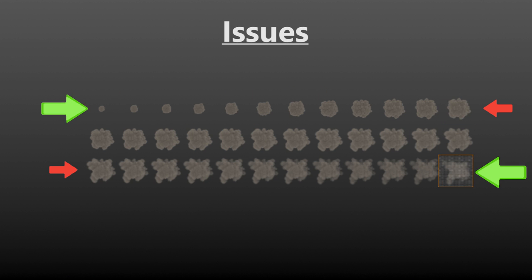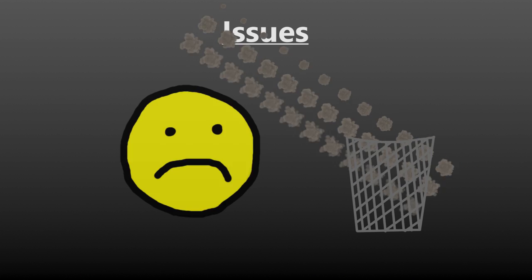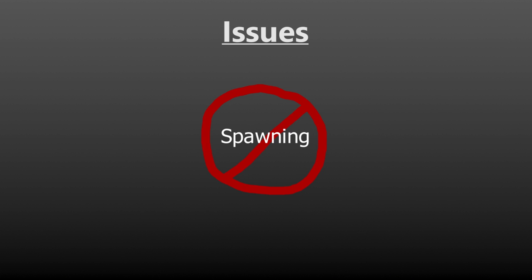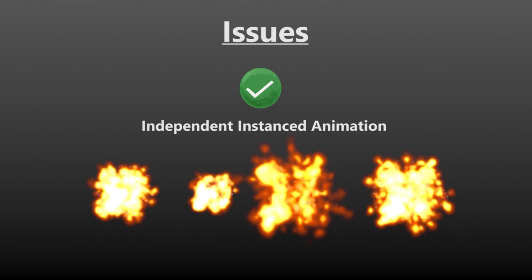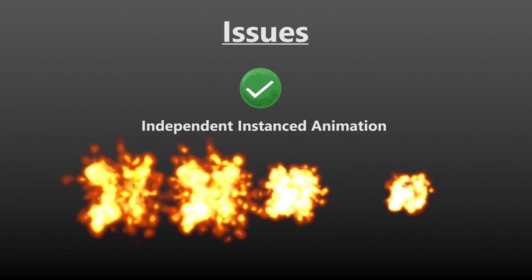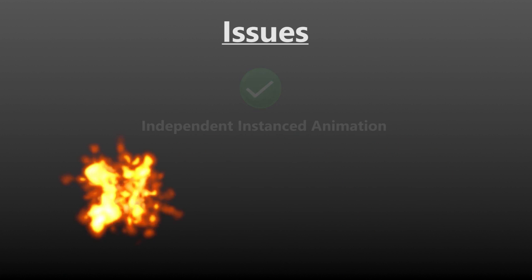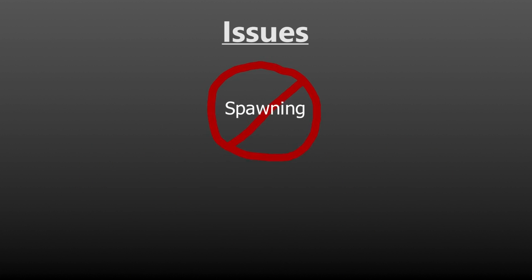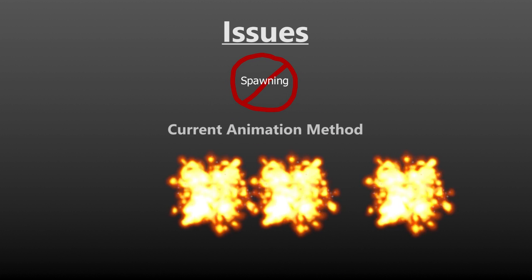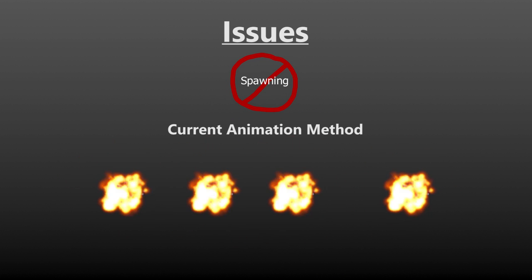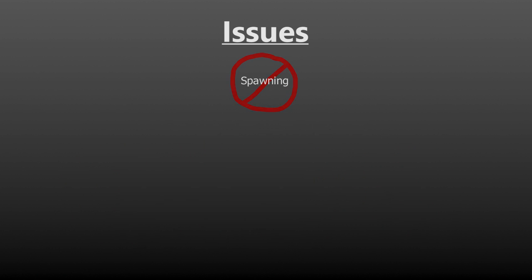The problem is that almost every animated texture is generated top left to bottom right, so for every animated texture you want to use you're going to have to manually rebuild it from scratch. Secondly it does not support instancing — if you spawn in lots of different explosions you want them to play their animation at different times depending on when they were spawned. However the default method does not allow for this, so if you spawn in 10 explosions they all play at the same time.